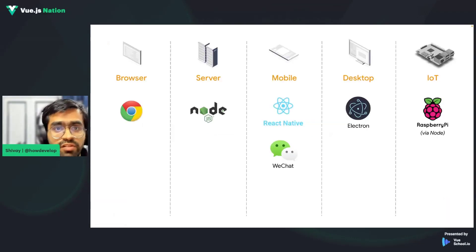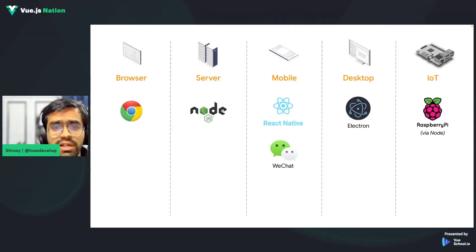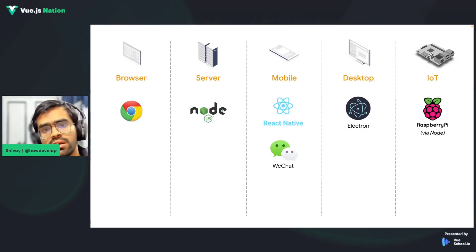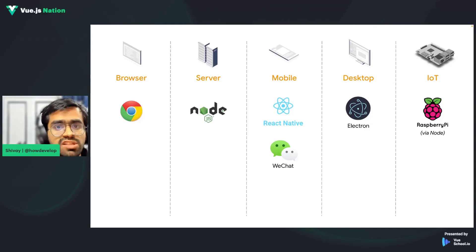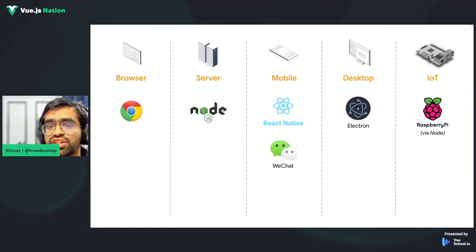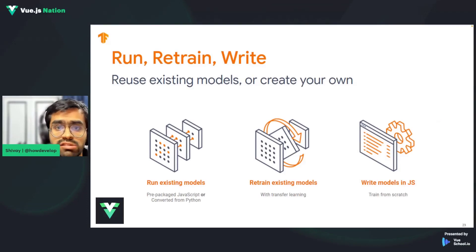JavaScript is a very versatile language. Since JavaScript can run on your browser, on the server, on mobile applications, on desktop, or even on IoT-based applications, you can bring the capability of machine learning to all these different platforms. JavaScript is one of the most popular programming languages, and especially with frameworks like Vue, so many developers can benefit by integrating machine learning models inside their Vue applications.